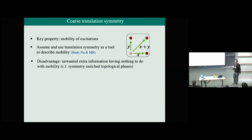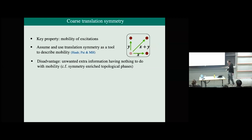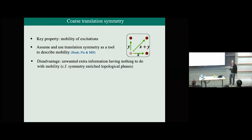However, there's a big disadvantage: if we just assume translation symmetry, a lot of extra information comes along that has nothing to do with restricted mobility. This also shows up in ordinary topological phases under the heading of symmetry-enriched topological phases. There will actually be a talk tomorrow from Shu Yang Song about translation-symmetry-enriched Z2 spin liquids. I'd like to get rid of that extra information for the purposes of this talk.